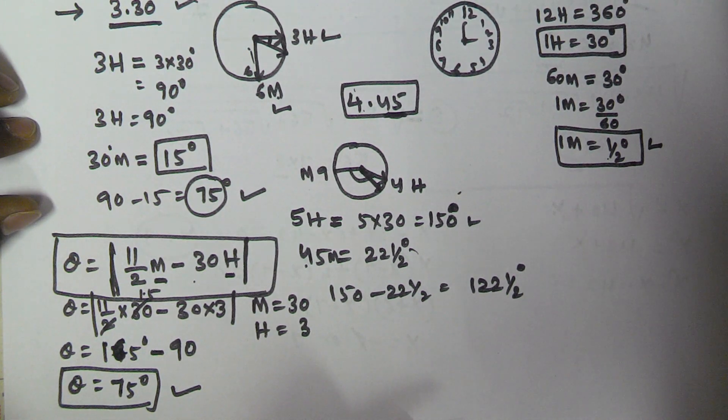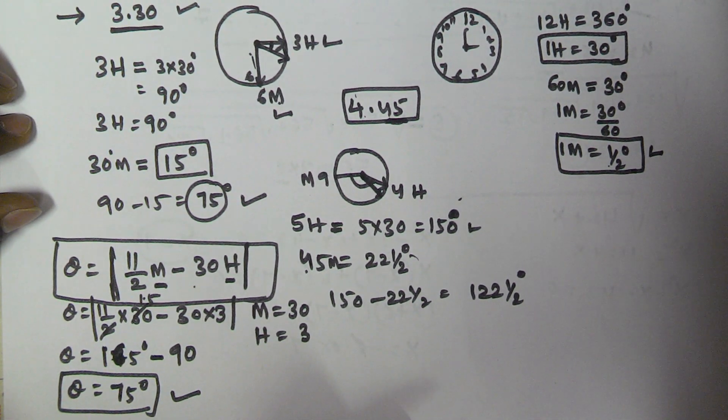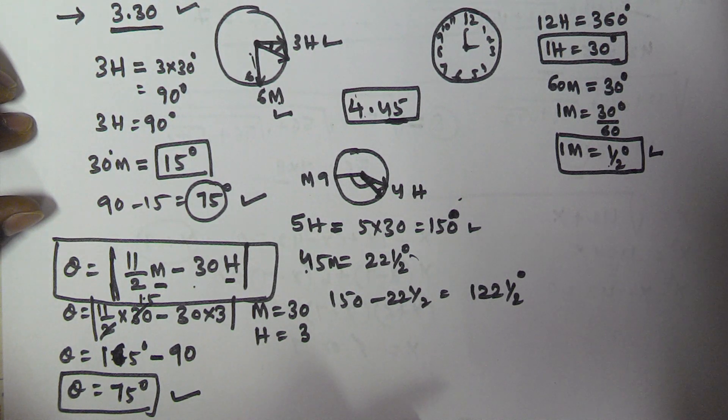So this is the shortcut formula you have to remember: theta equals the absolute value of (11/2 times m) minus (30 times h). I hope you understand this. Thank you very much for watching this video. Please subscribe to my channel.